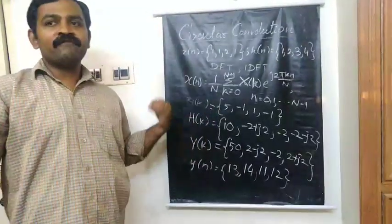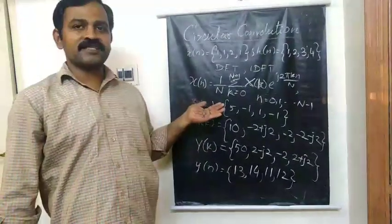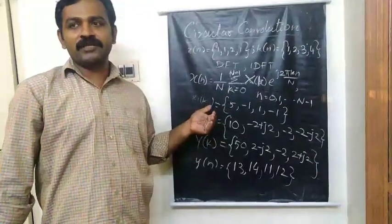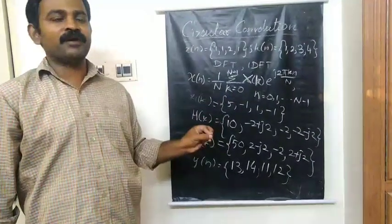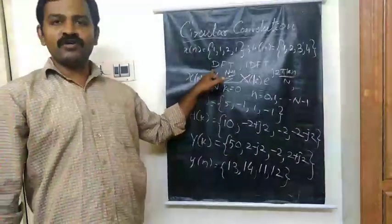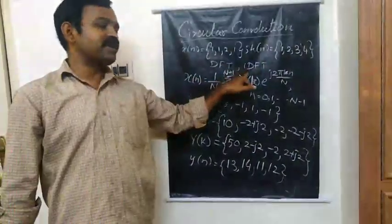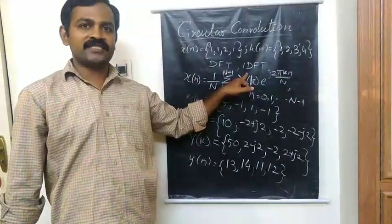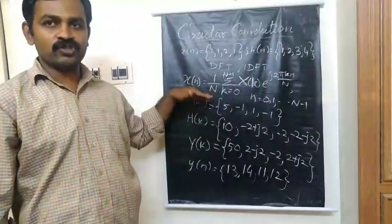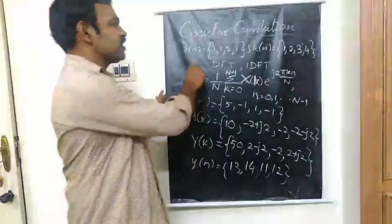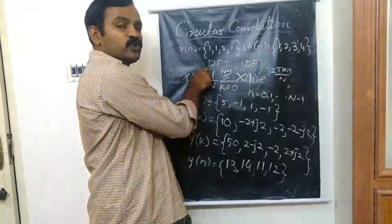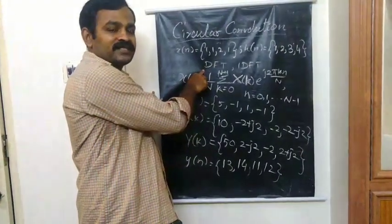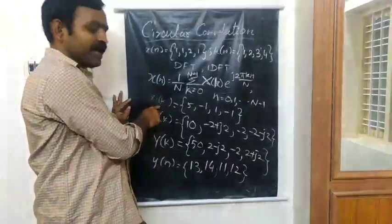So in this manner, without doing Concentric Circuit Method or Matrix Multiplication Method, with the help of Forward Discrete Fourier Transform as well as Inverse Discrete Fourier Transform, you can solve Circular Convolution.